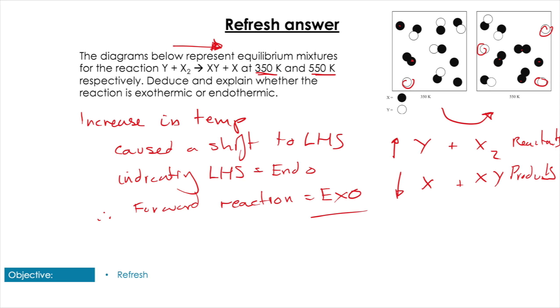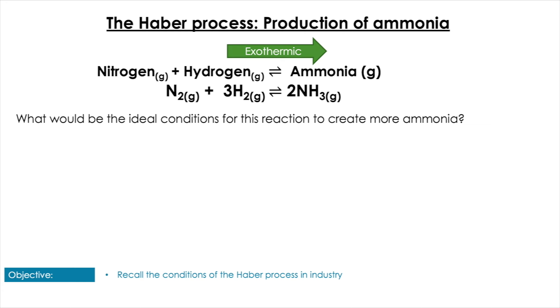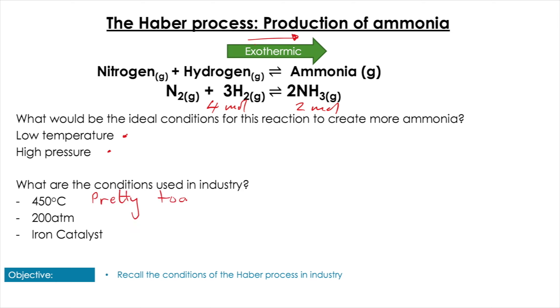So let's have a look at the Haber process then. Now we can see from this overall equation that we have four moles of gas on the left, two on the right, and it's exothermic going from left to right. So the ideal conditions for us to create more ammonia would be a low temperature and a high pressure. It's going to be a low temperature because it's exothermic, so if we lower the temperature the reaction will oppose that change and create more ammonia. And because of the more moles on the left-hand side, if we increase the pressure the reaction will decrease it. Now the conditions in industry seem not to follow this. 450 degrees is pretty toasty and 200 atmospheres in terms of industry isn't really as crushingly high as we would expect it to be.